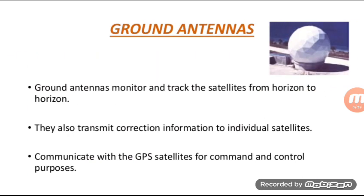Ground Antennas monitor and track the satellites from horizon to horizon. They also transmit corrected information to individual satellites and communicate with the GPS satellites for command and control purposes.